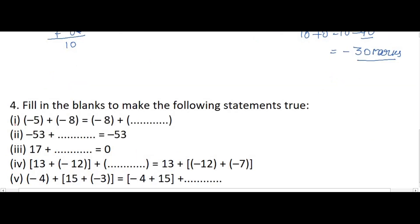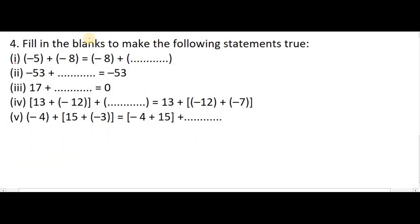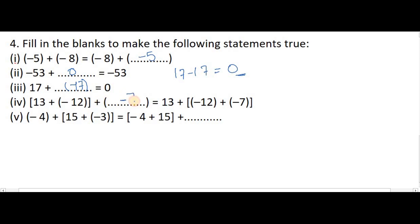Now we move on to the next question: Fill in the blanks to make the following statements true. First: minus 5 plus blank equals minus 8 — minus 5 is missing, so we write minus 5. Second: minus 53 plus blank equals minus 53 — adding 0 to any number doesn't change it, so the answer is 0. Third: 17 plus minus 17 equals 0 — because subtracting a number from itself gives 0. Fourth: 13 plus blank plus minus 7 — minus 12 is missing.